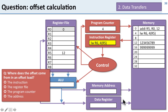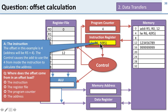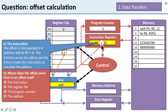Another question: where does the offset come from when we have an offset load? The offset comes from inside the instruction — this is an immediate instruction because it has an immediate value embedded in the instruction. When we process it, the ALU does an add and the control tells the register file where to get the data: part comes from register 5, and part comes directly from the instruction — the value 4. We use that to calculate the memory address for the operation.